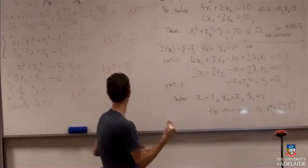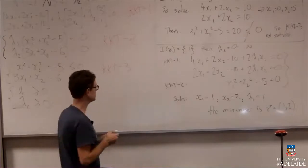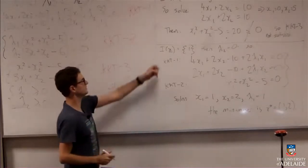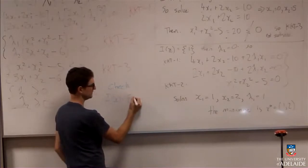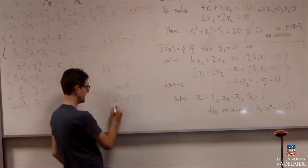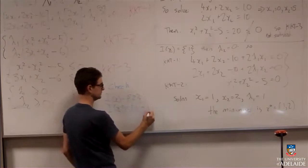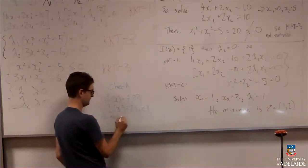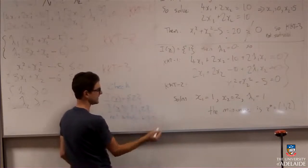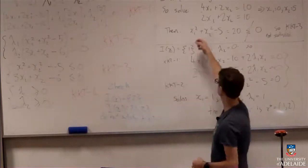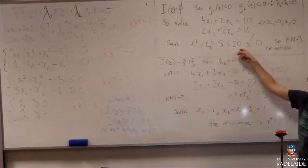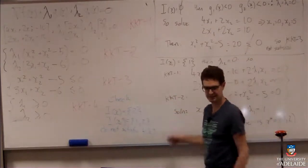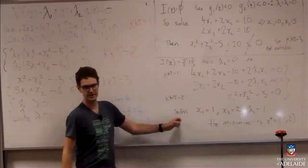Technically, we should check the other two conditions: activating only constraint two, or activating both constraints one and two. I'll leave those for you to do. Just as the case where neither constraint was activated violated KKT3, those other cases will violate different KKT conditions. The only case that works is this one, which is how we know we've found the minimizer.